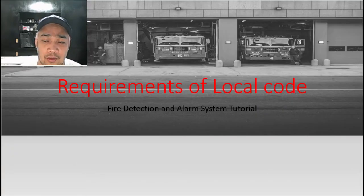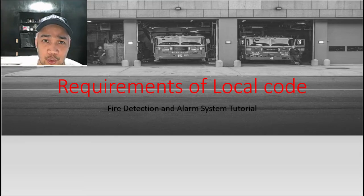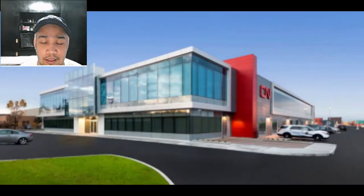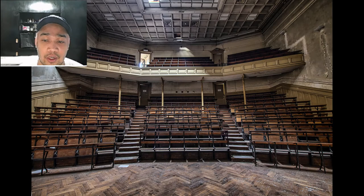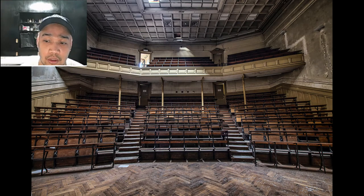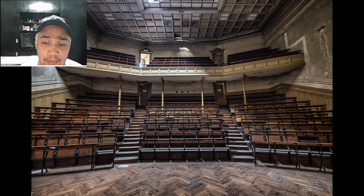Once the code is determined, you can now decide whether to include a fire detection and alarm system in the building. There are different requirements for every type of occupancy. For example, a fire alarm may not be required in a two-floor business occupancy but may be required in a two-floor assembly occupancy, depending on the applicable code.